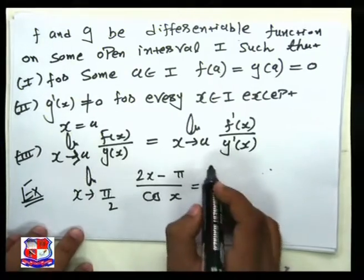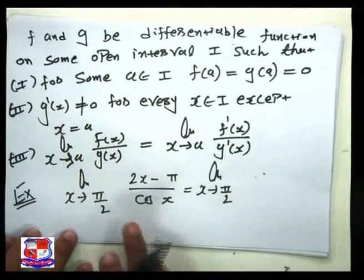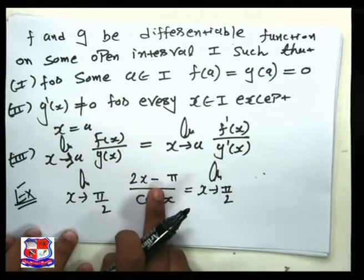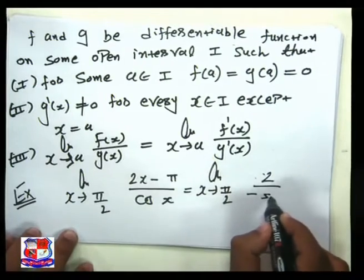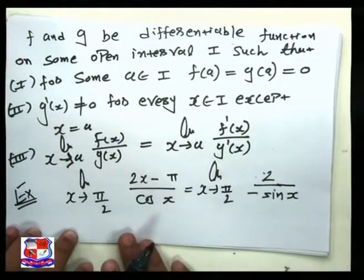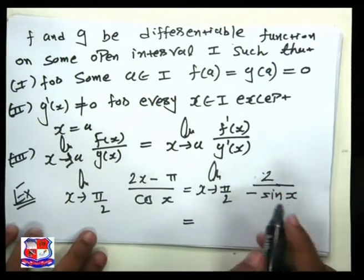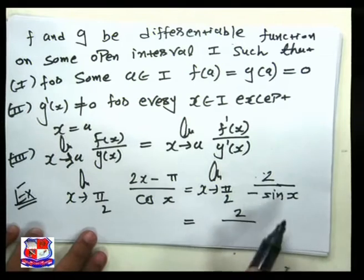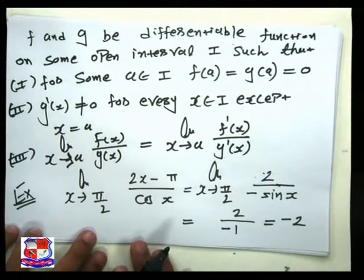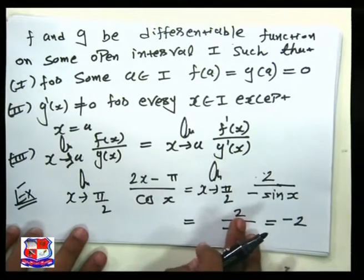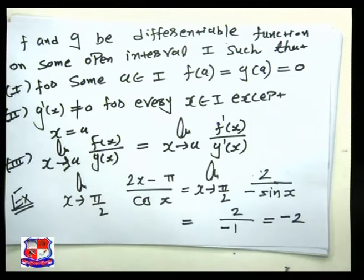Applying L'Hôpital's Rule: the limit as x tends to π/2 of the derivative of f(x), which is 2, divided by the derivative of cos x, which is −sin x. Now putting x = π/2: the numerator is 2 and sin(π/2) = 1, so we get 2/(−1) = −2. So the answer is −2. That completes question 2A, first part. Now let's look at question 2A, second part.